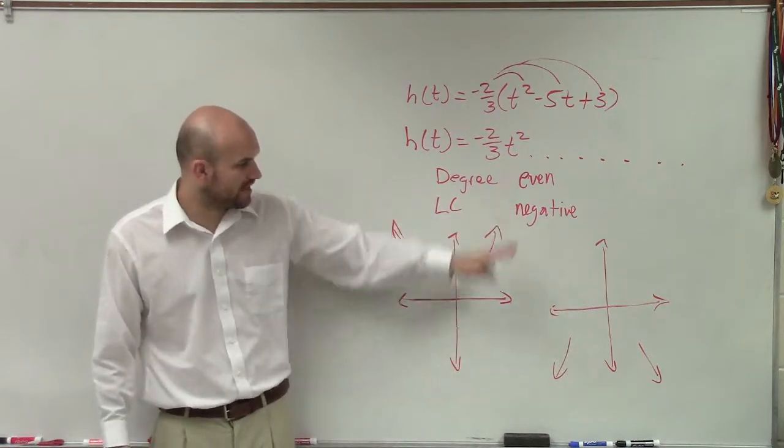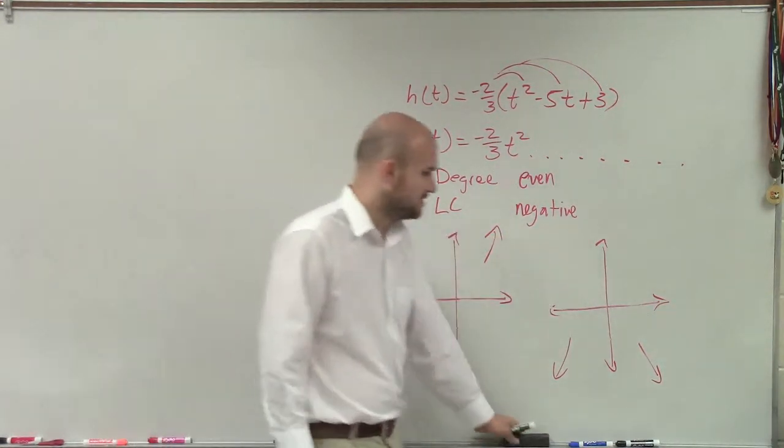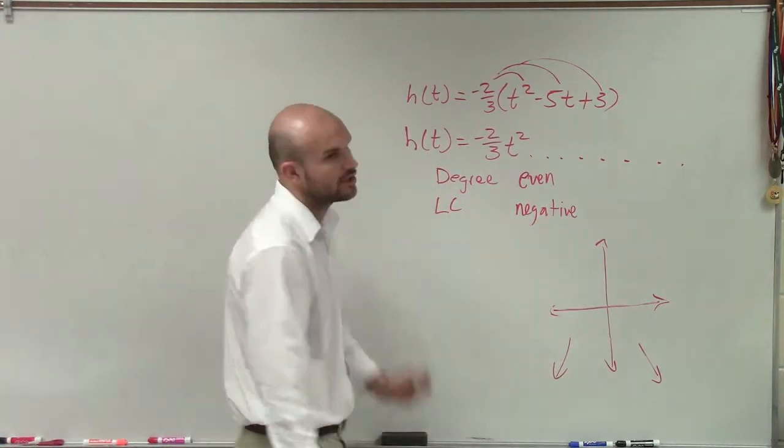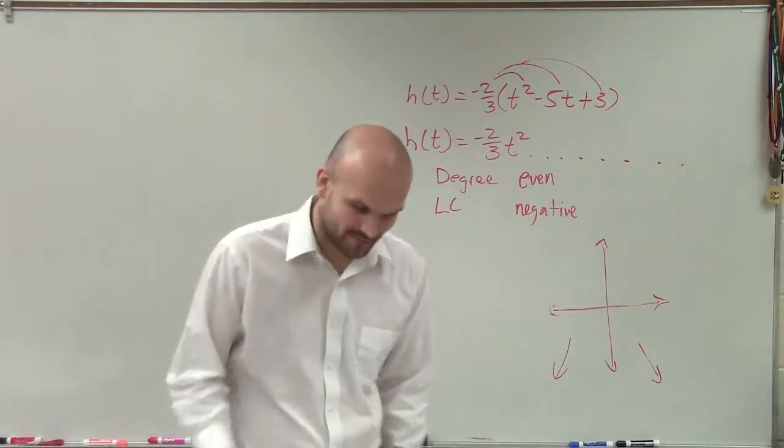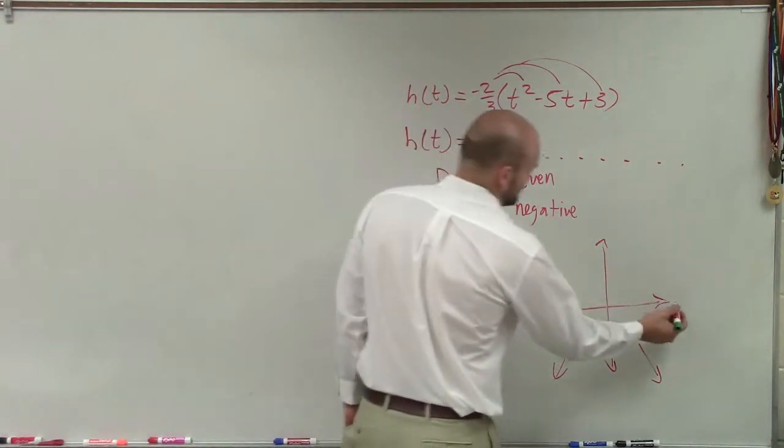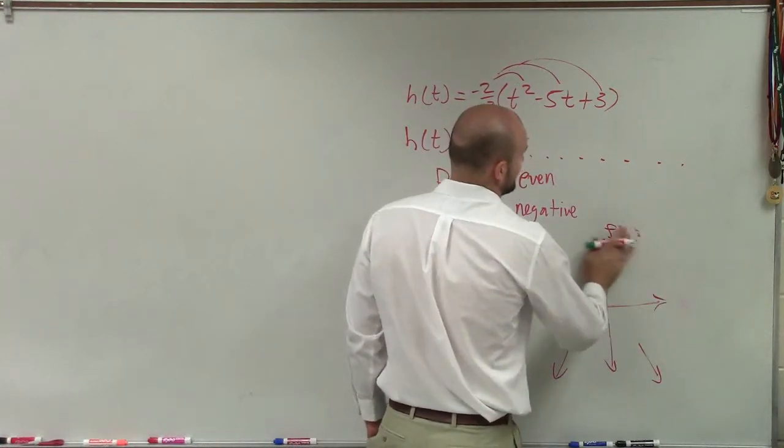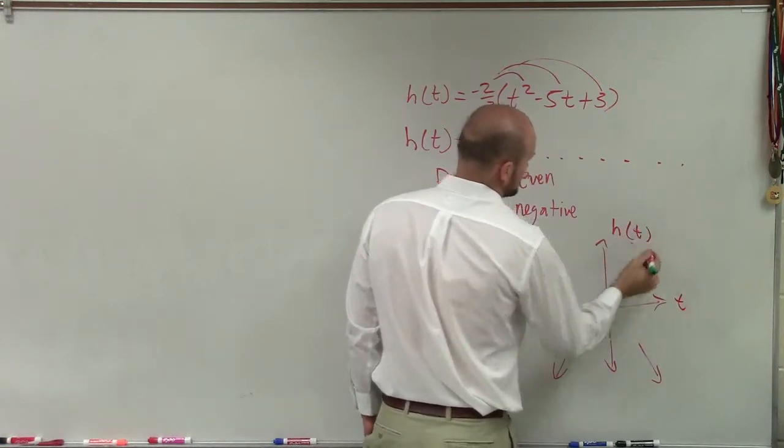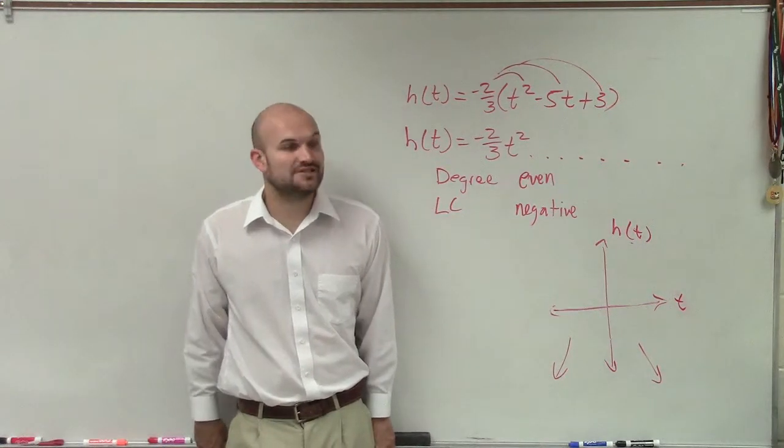So we look at our leading coefficient, and we know that our graph is going to open down. That's going to be our end behavior. However, ladies and gentlemen, if you didn't write it formally, I marked you down. So let's go back through how to write this formally. We have a t and an h(t) function.